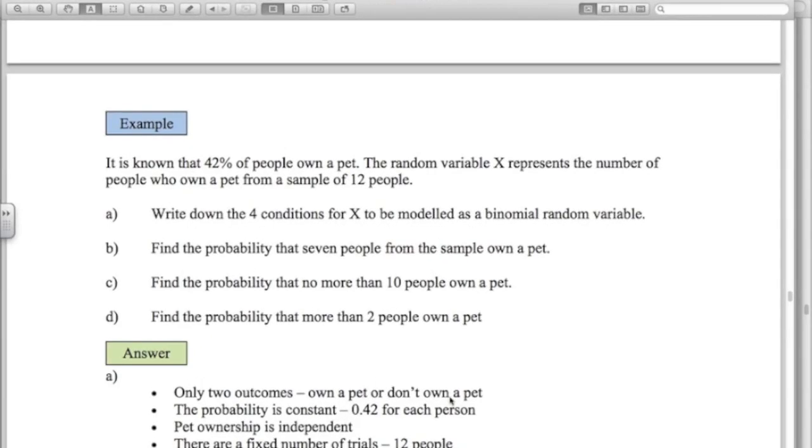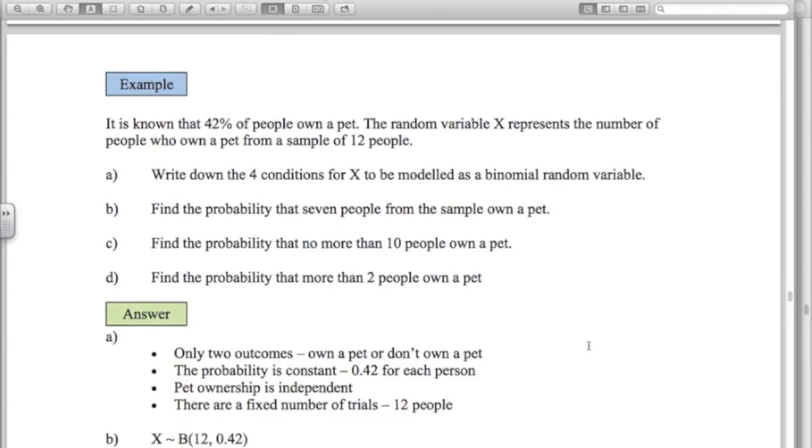Second example, we know 42% of people own a pet. We're going to look at 12 people. And X is the random variable for the number of people who own a pet from that sample of 12. Four conditions. There's only two outcomes. You either own a pet or don't own a pet. The probability is constant. Pet ownership is independent. And there are a fixed number of trials, 12 people. If the question in the exam asks you this, make sure you relate it to the situation that you're dealing with, not just saying there's only two outcomes. Also put in there specifically how that relates to this situation.